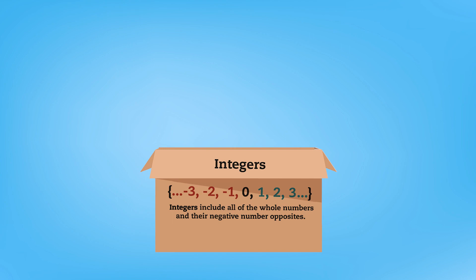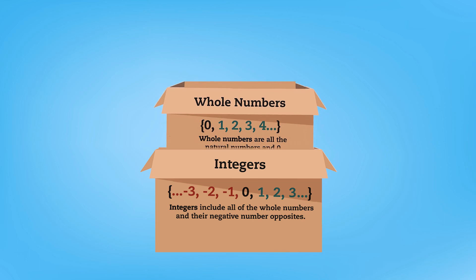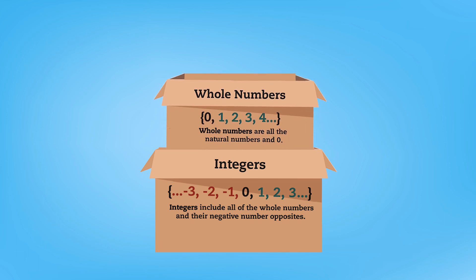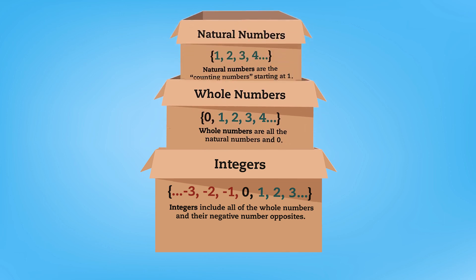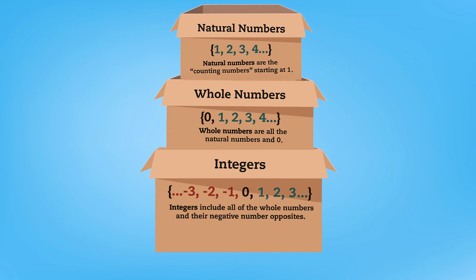Do you notice something about the three types of numbers we've looked at? If a number is a whole number, that means it's also an integer. And if a number is a natural number, that means it's also a whole number and an integer. Let's practice this together.